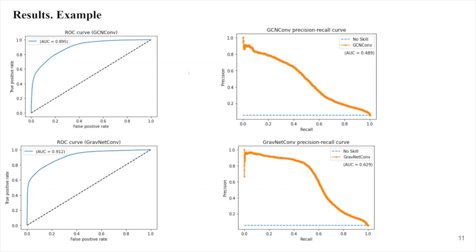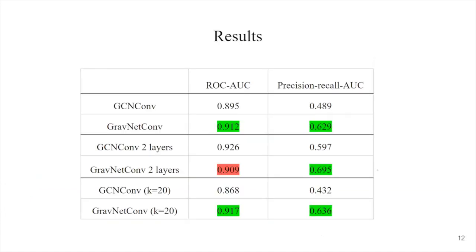We have a precision-recall AUC of 0.48 for the regular layer and 0.89 for the graph net, which may seem worse, but the no-skill value is very low, so this value is actually hard to get. We also see that the precision-recall curve for the graph net is better. Here are all results that I got.